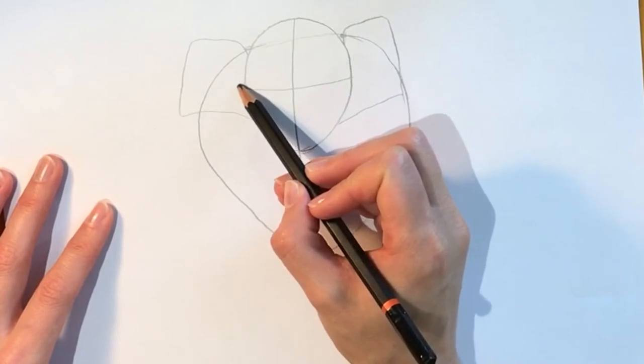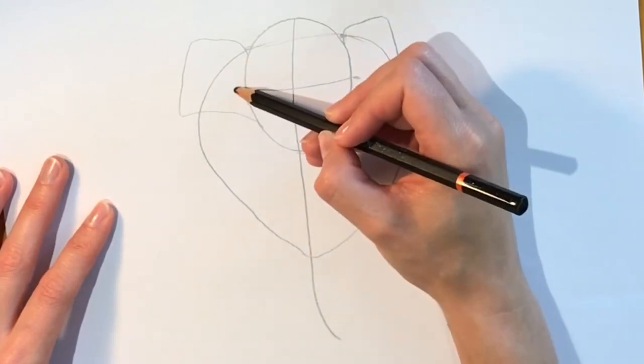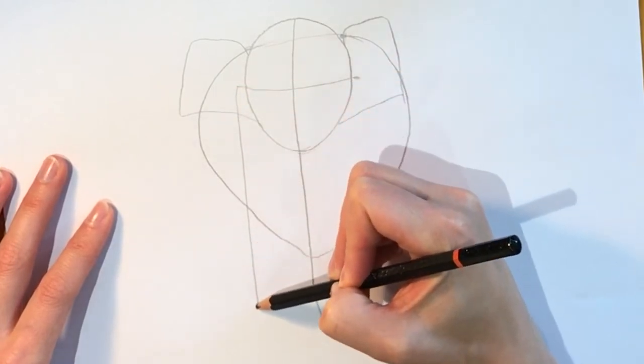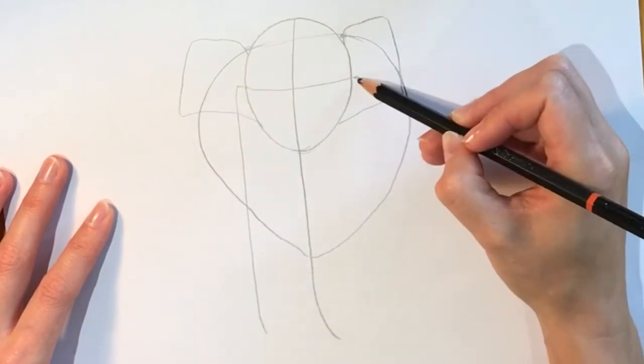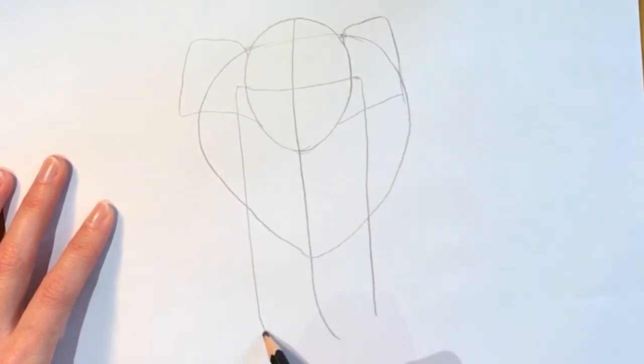Now this horizontal line, extend it slightly, and on the other side as well, and we're going to be doing a long rectangle shape coming down, and on the other side as well. Join up the rectangle and that's your first stage.